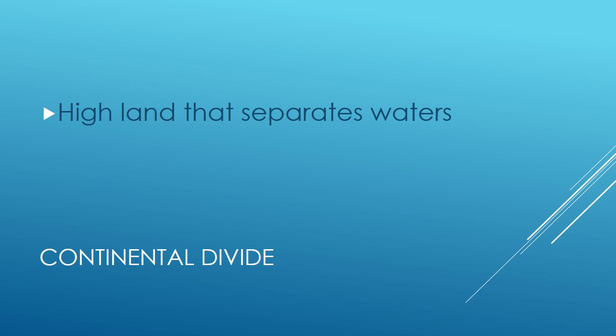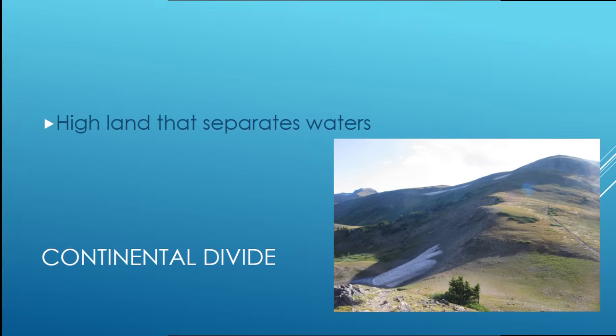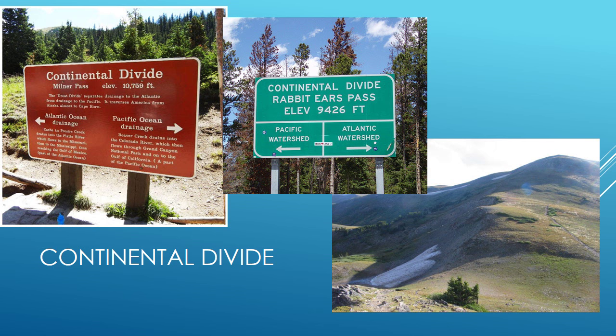Our next word is continental divide — high land that separates waters. Look at this map: the red line is the continental divide, located in the Rocky Mountains. Everything on the right side, the purple-blue area — any water in rivers, streams, or rain that falls on that land — will flow to the Atlantic Ocean. On the left side, all rivers, streams, and rain will flow to the Pacific Ocean. You can actually go hiking on the continental divide in the Rockies and see exactly where the water gets separated to the two separate oceans.